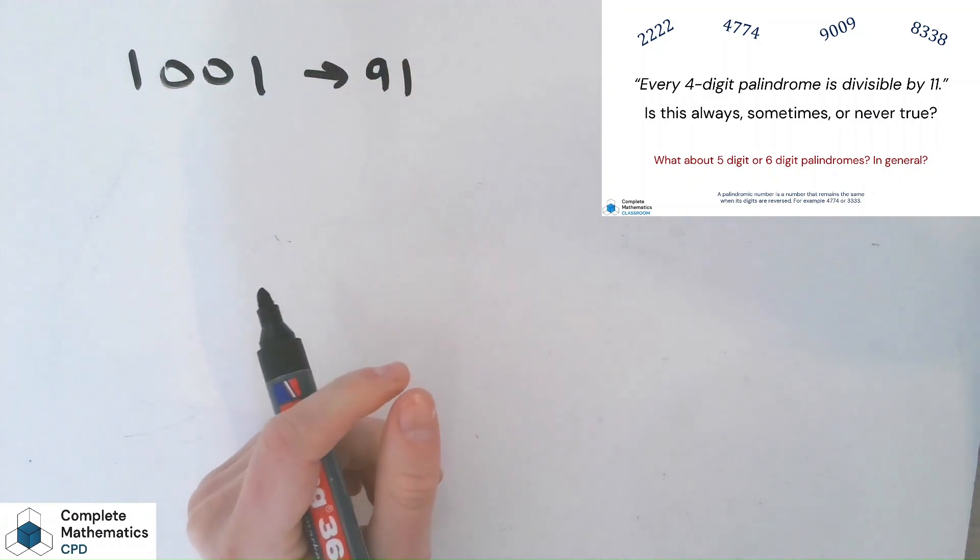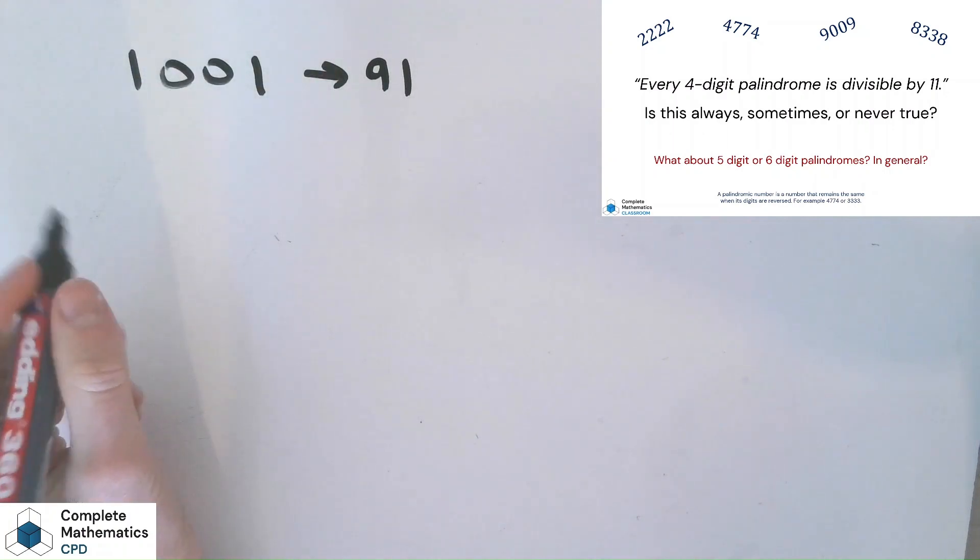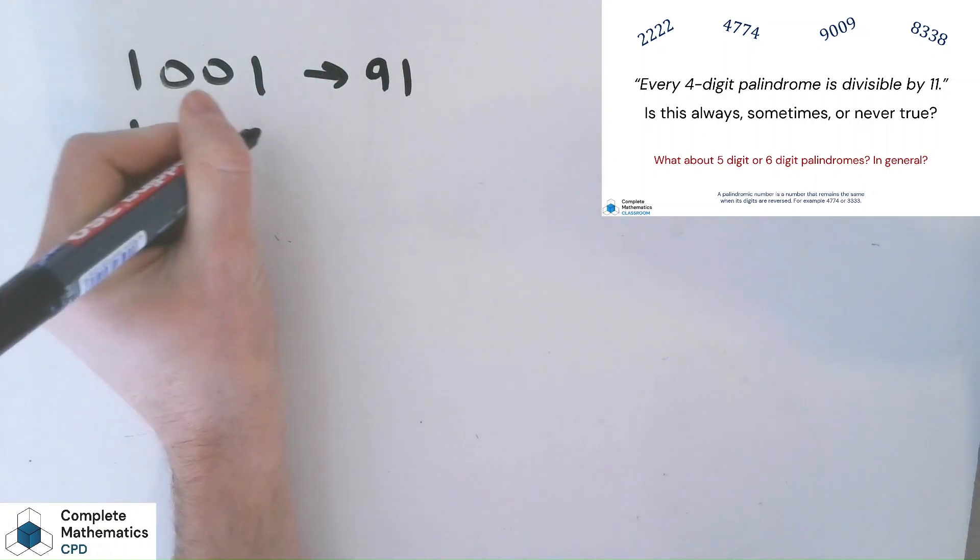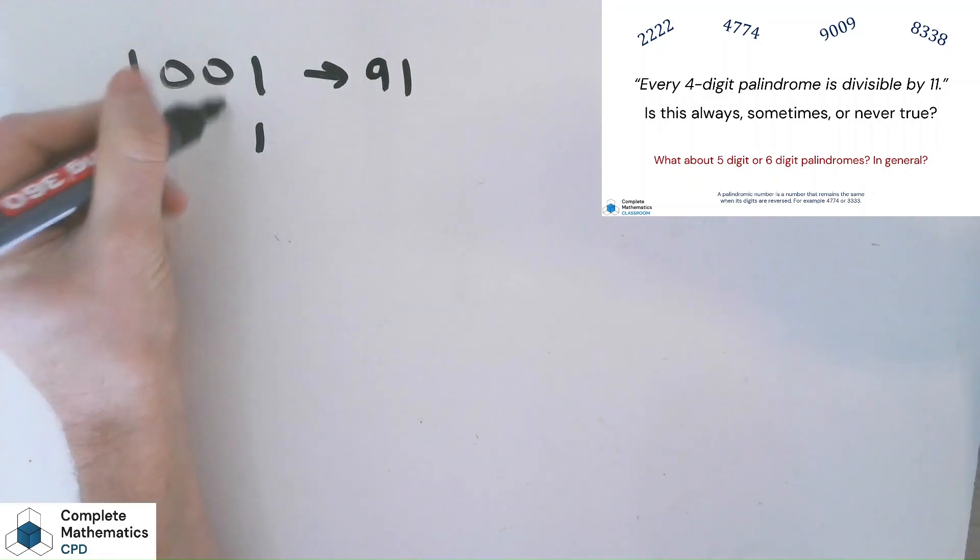And then I say, OK, what's the next smallest palindrome? And what do you physically have to do to this number? Well, the thousands and the units stay the same, and the tens and the hundreds increase by one. That's what happens as you go from the smallest palindrome to the next smallest.